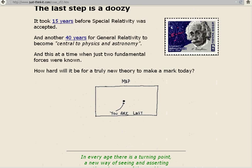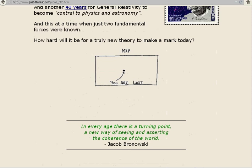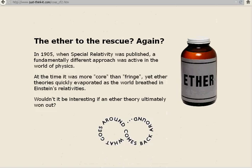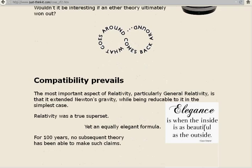The ether to the rescue, again? In 1905, when special relativity was published, a fundamentally different approach was active in the world of physics. At the time it was more core than fringe, yet ether theories quickly evaporated as the world breathed in Einstein's relativities. Wouldn't it be interesting if an ether theory ultimately won out? Compatibility prevails. The most important aspect to relativity, particularly general relativity, is that it extended Newton's gravity while being reducible to it in the simplest case. Relativity was a true superset, yet an equally elegant formula. For 100 years, no subsequent theory has been able to make such claims. Elegance is when the inside is as beautiful as the outside. Coco Chanel.